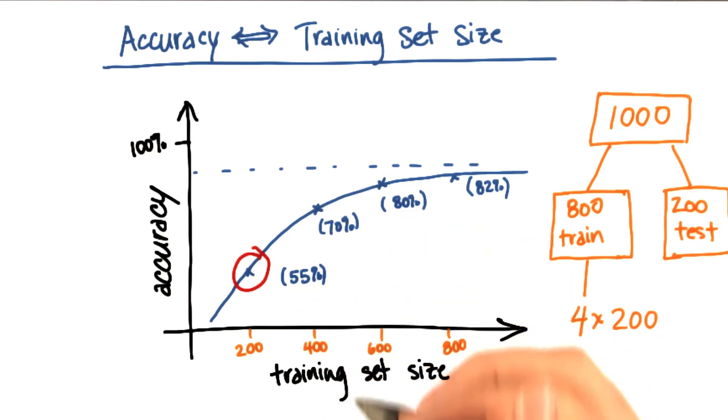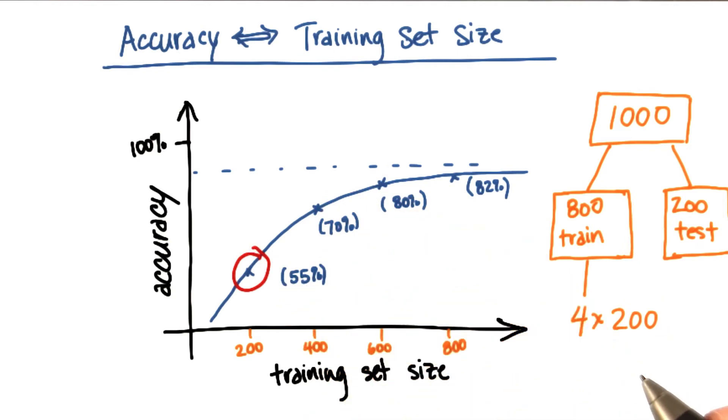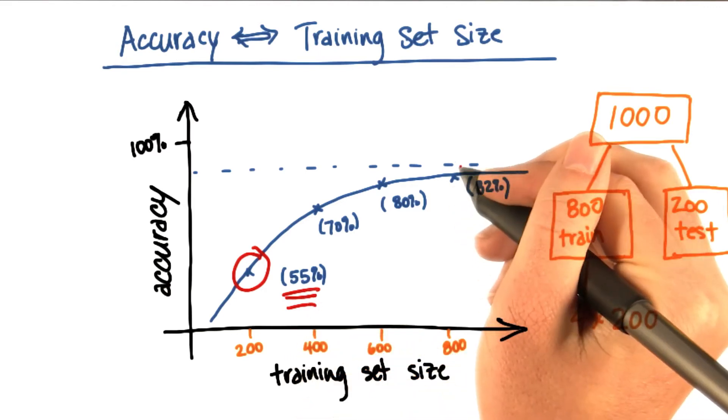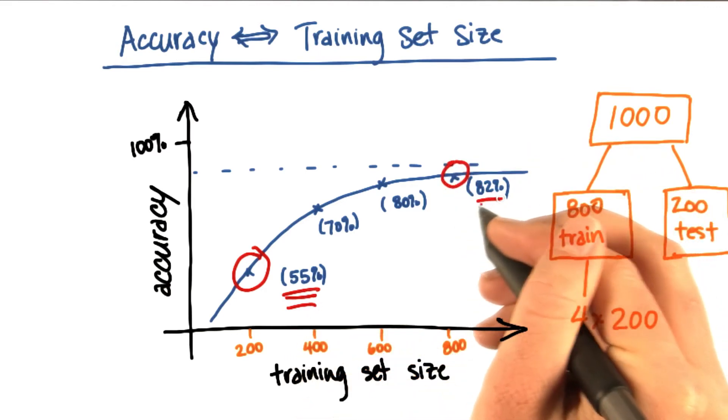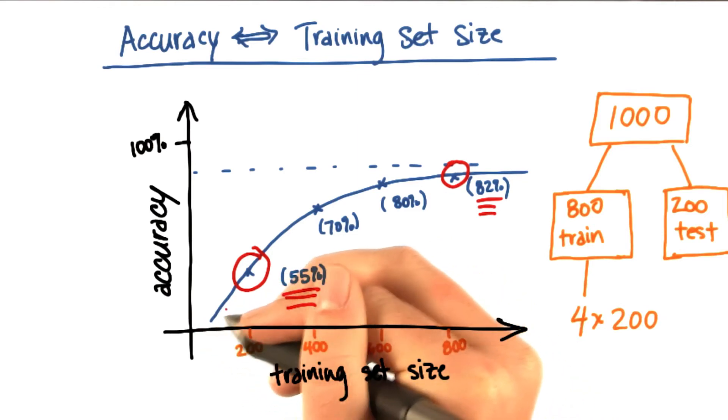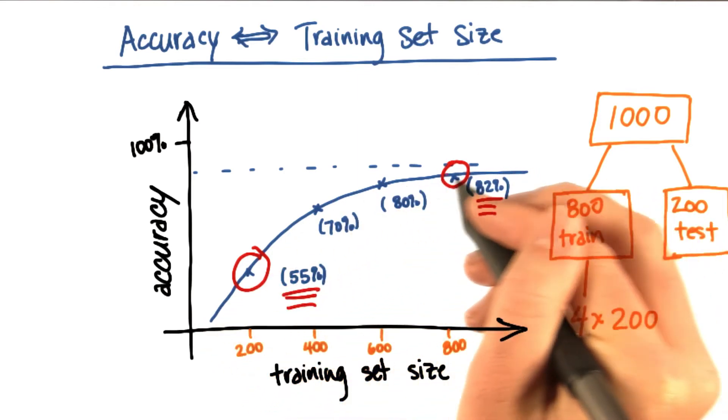Obviously 200 wasn't ideal. If I only had a training set that had 200 events in it, I couldn't expect to get a very good accuracy. By the time I got up to 800, I'm all the way up to 82%. And moreover, by looking at this trend, I can see that it's starting to plateau.